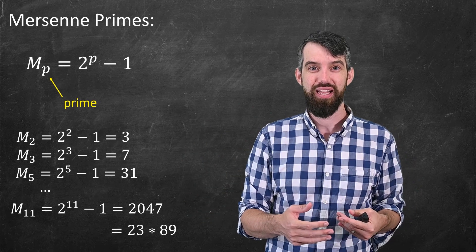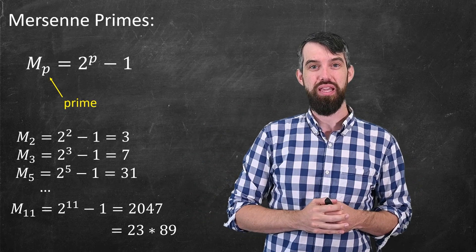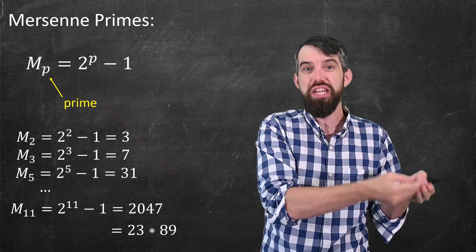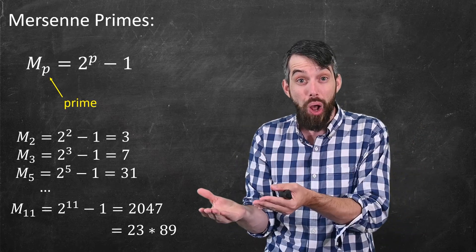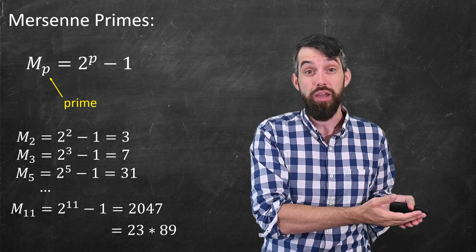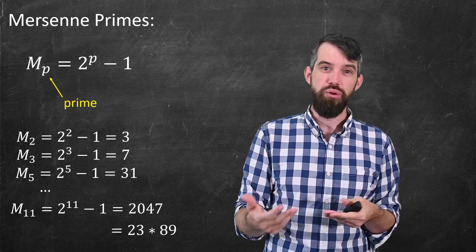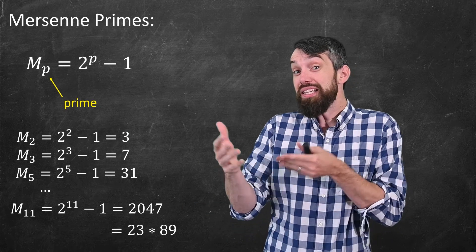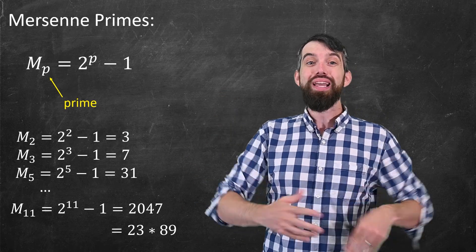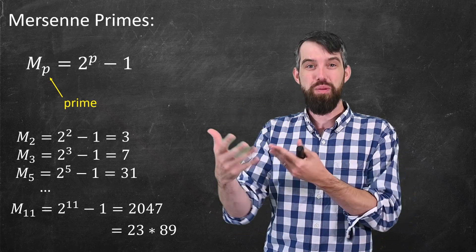And so what this means is, if I start with a prime p, the Mersenne number associated to that prime p may be prime, or it may not be. We have to do some further tests to figure it out. So just because you can compute 2 to the p minus 1 doesn't necessarily mean that you get a prime. It gives you a candidate that might be prime.